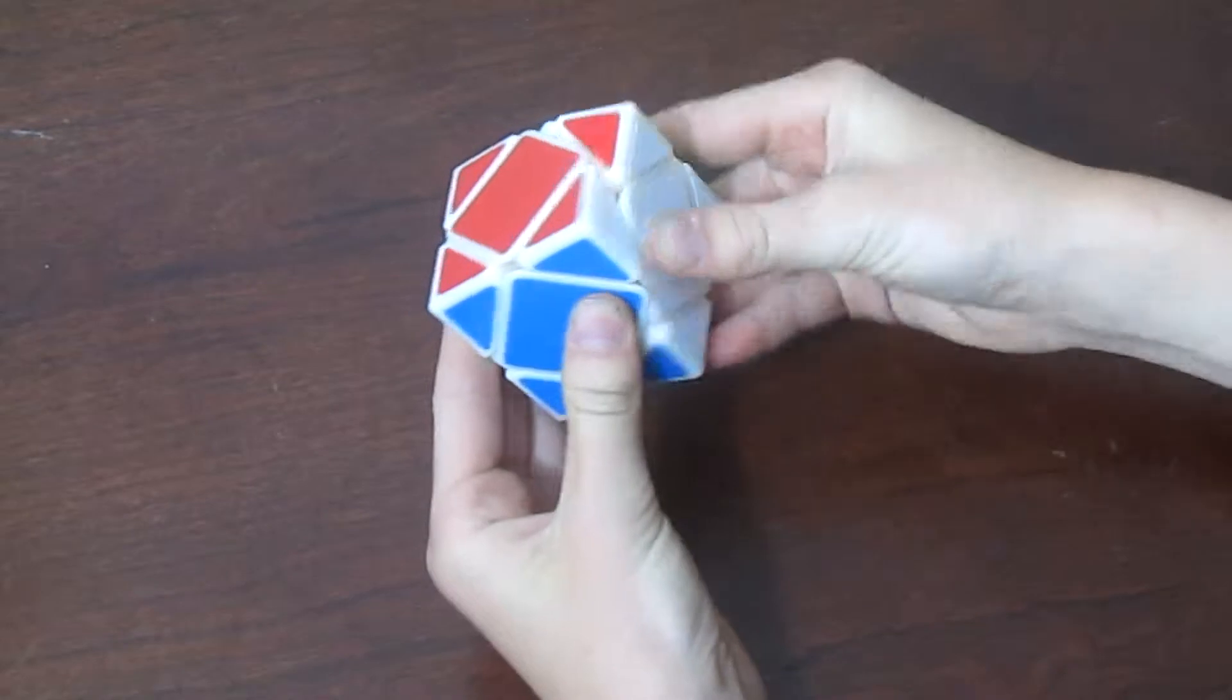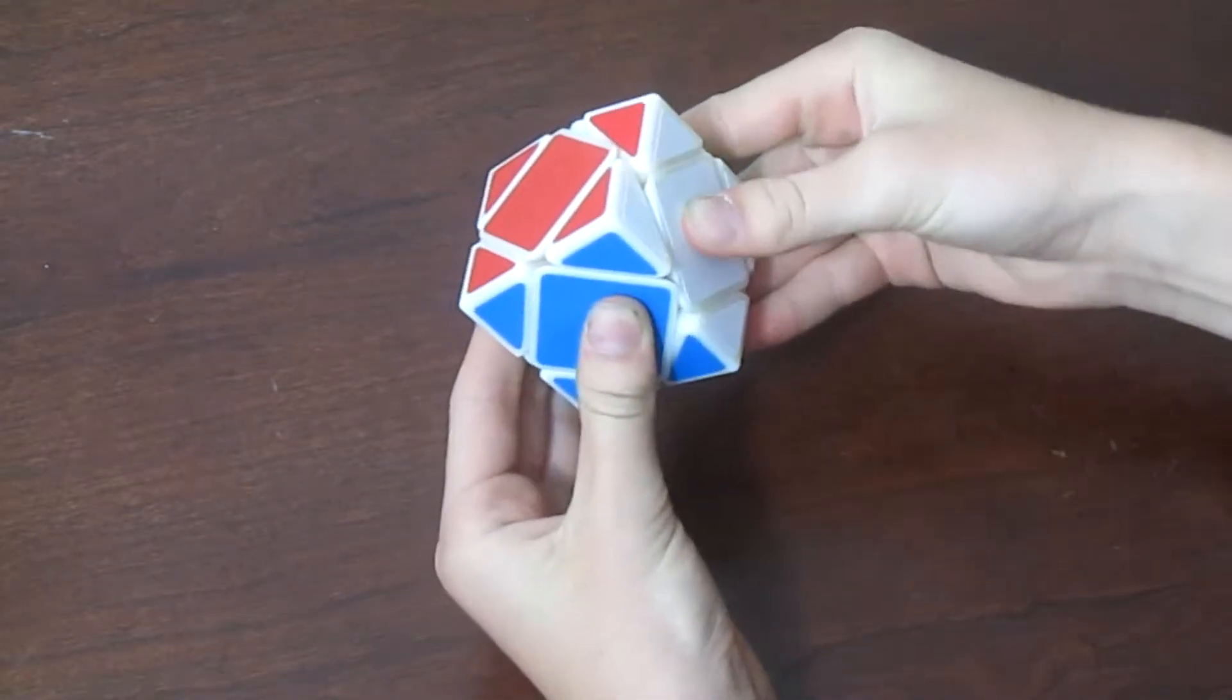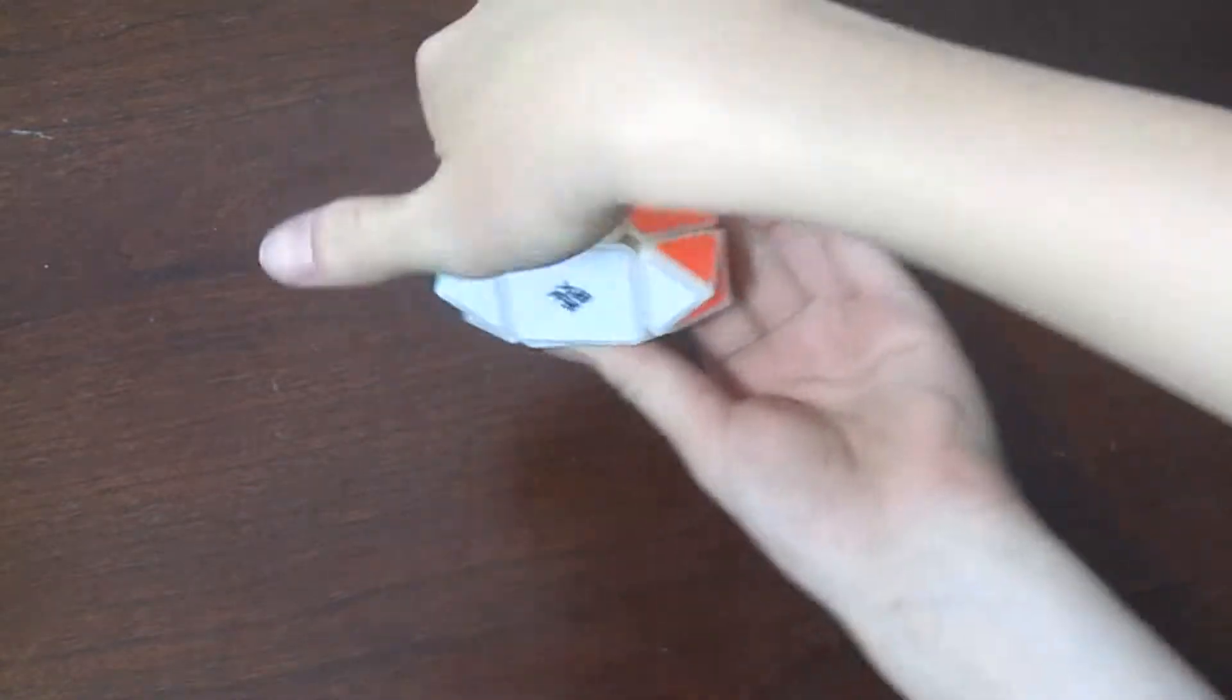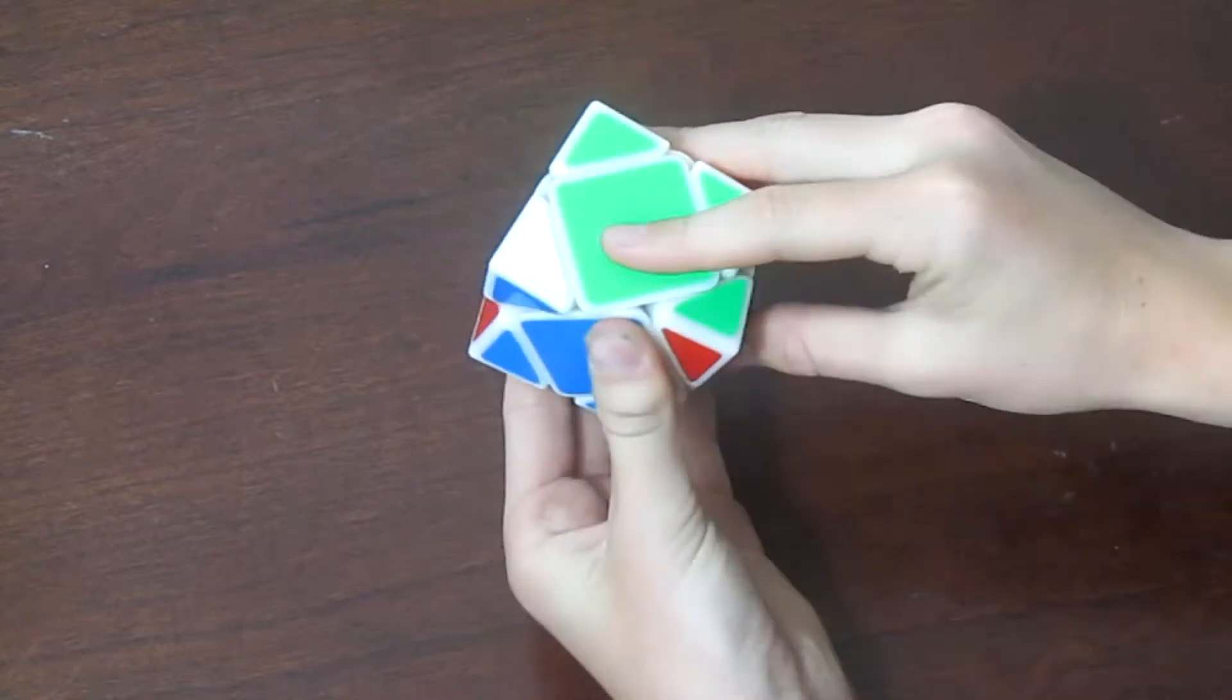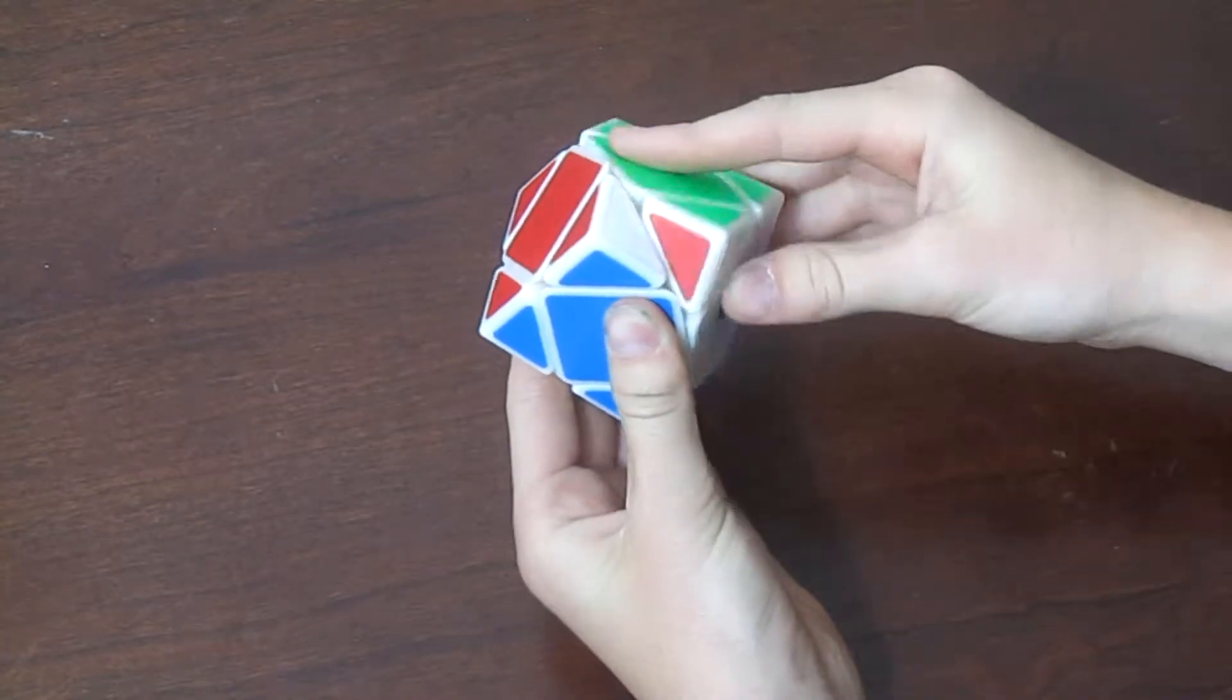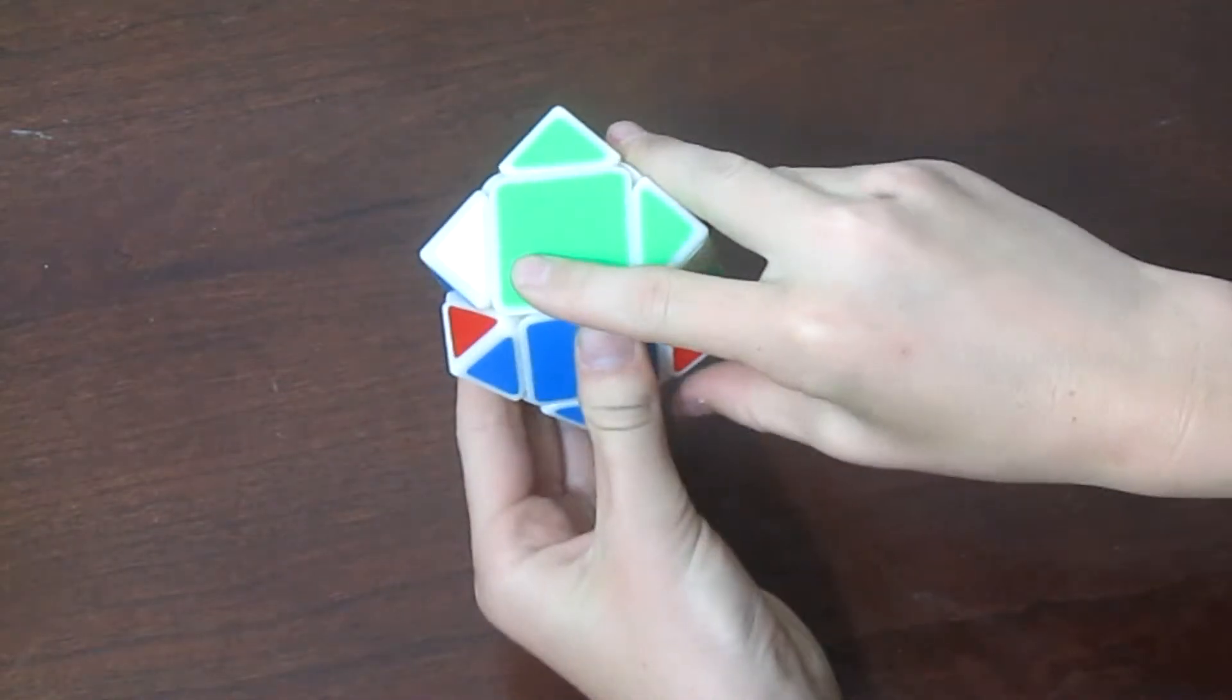So I'm gonna go ahead and pull down with the right side like this. And as I'm pulling down, I'm gonna be pushing with this pointer finger and the middle finger and ring finger as hard as I can, so it quickly snaps in like that.